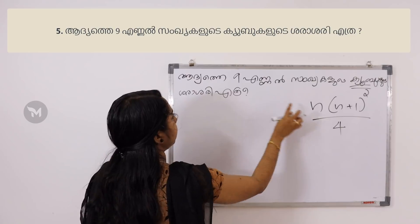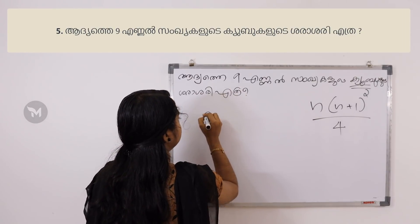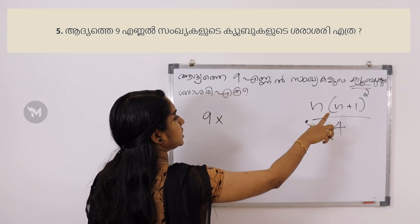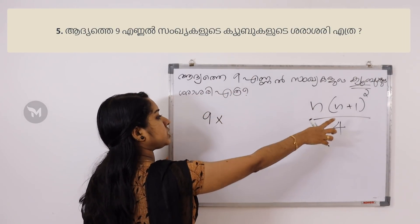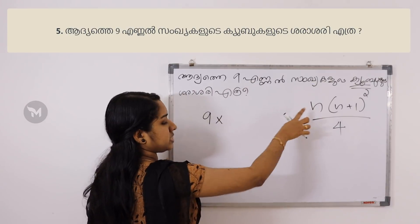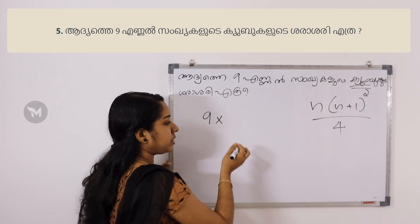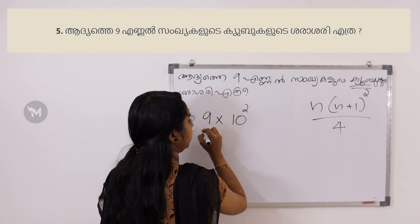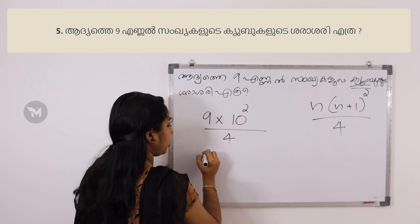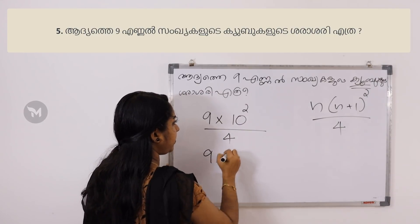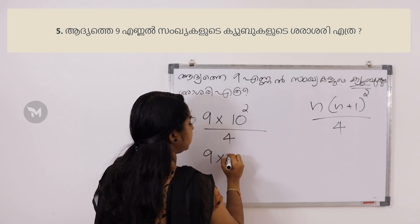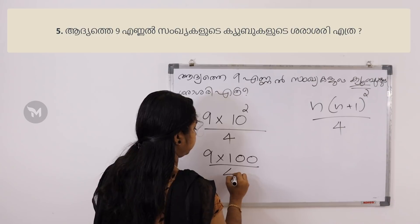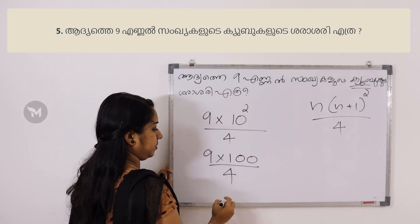This is one of the easier ones. The equation is n into n plus 1 whole square divided by 4. What is n? 1 into n plus 1 whole square. That is n plus 1 equals 9 plus 1, which is 10. Then 1 into 12 squared is 8 by 4.